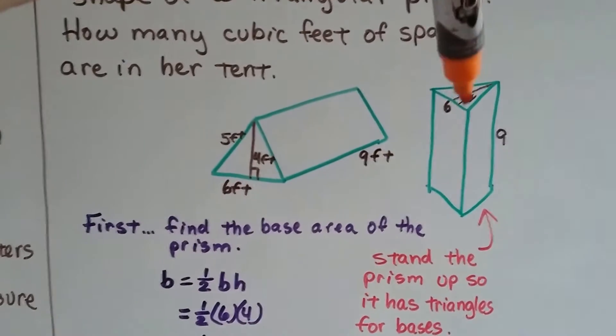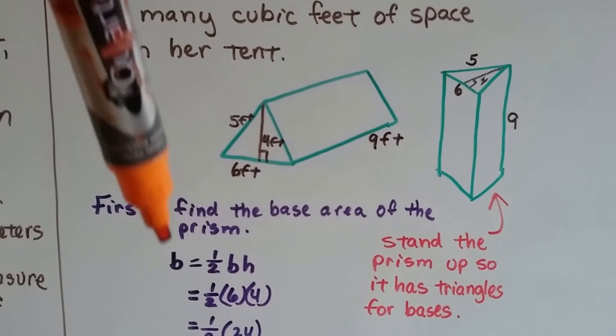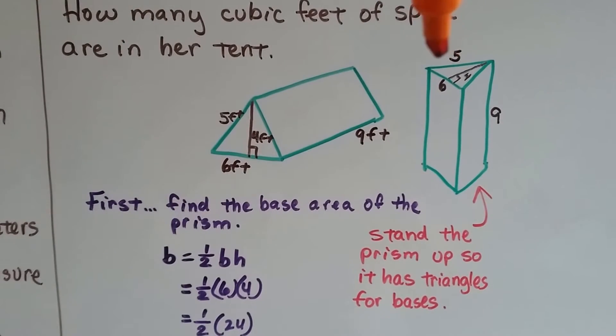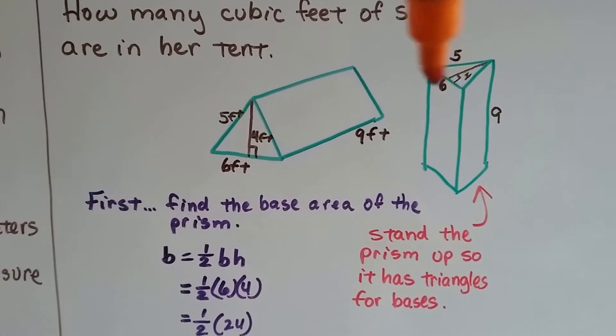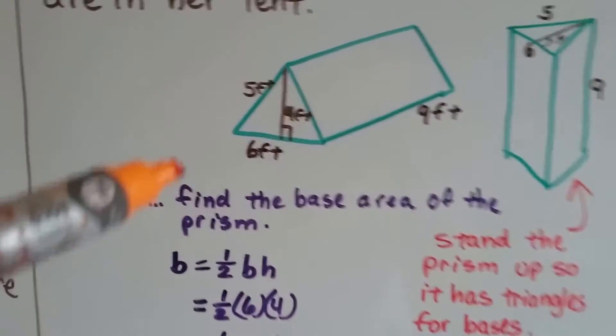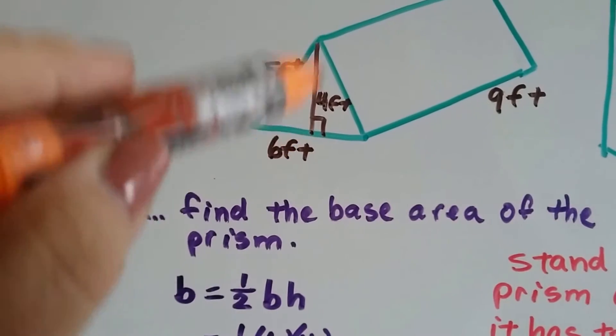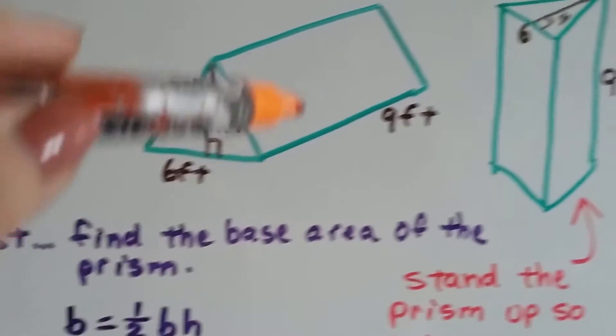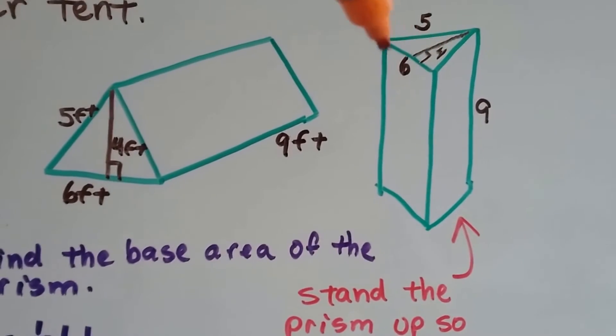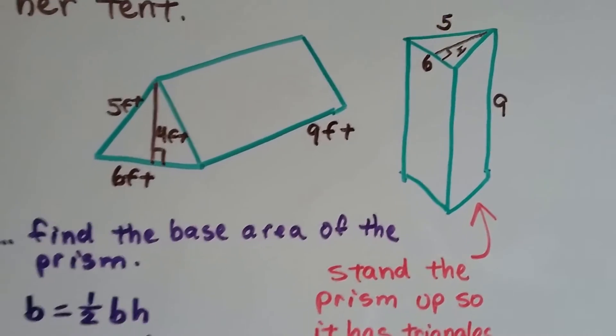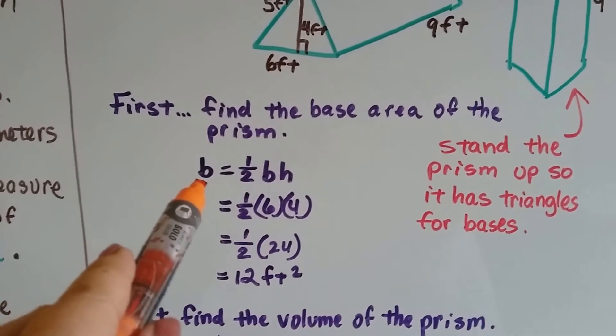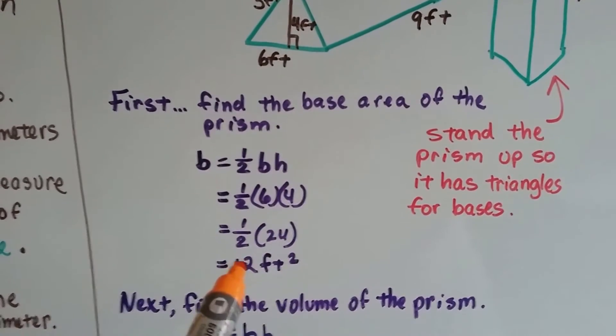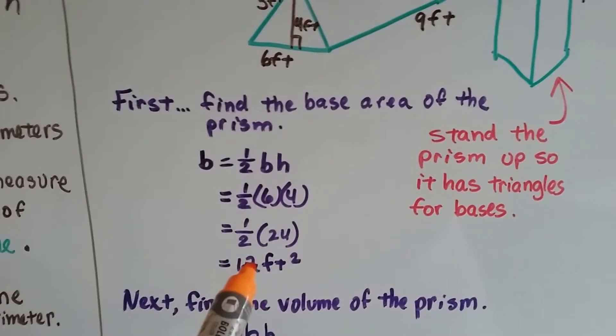So to find a base, that means we're finding a triangle. We do base equals half base height. So that means it's equal to half six times four. Because see how this is six and the height is four? We've got our little perpendicular symbol there showing it's a ninety degree angle. So we do six times four is twenty-four and half of that is twelve. So that base is twelve square feet.